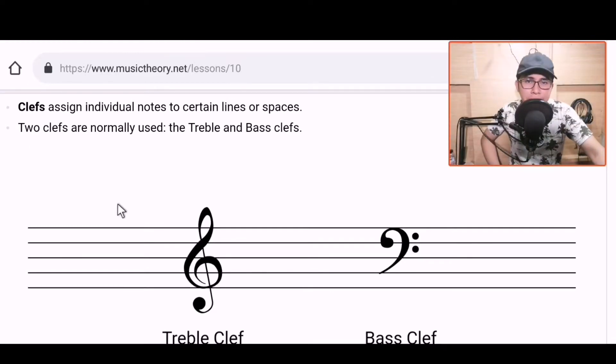So, a quick recap. The staff has five lines: one, two, three, four, five, and four spaces in between. Don't forget that guys. It's one of the basic elements you need to learn when reading music sheets.